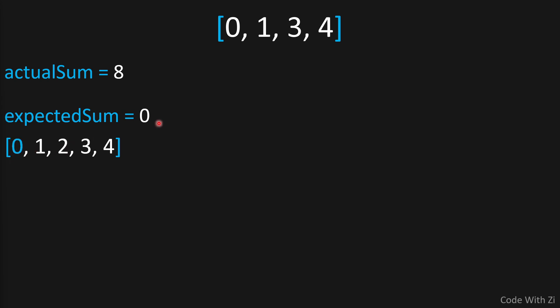Walking through the expected sum: zero plus zero is zero, one plus zero is one, two plus one is three, three plus three is six, and four plus six is ten. So our expected sum is ten.